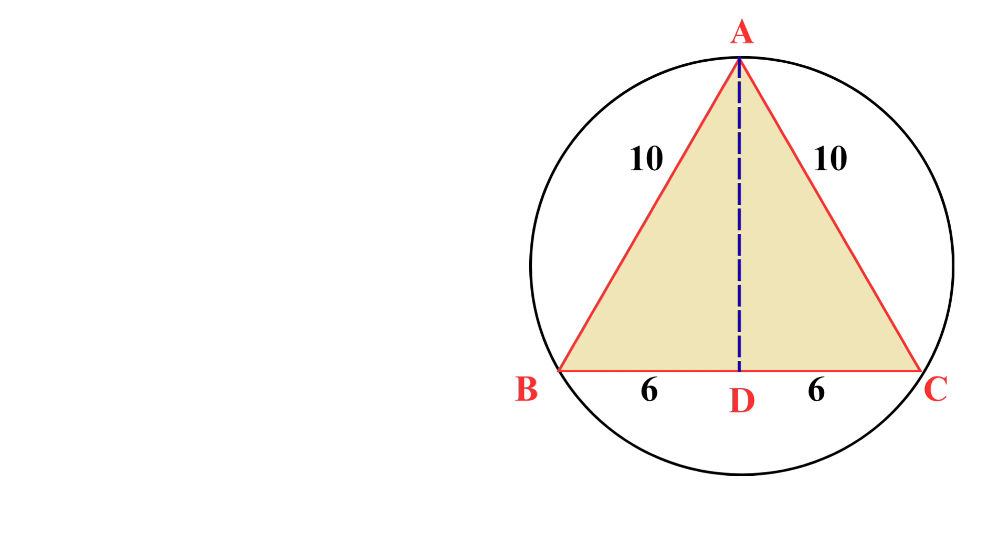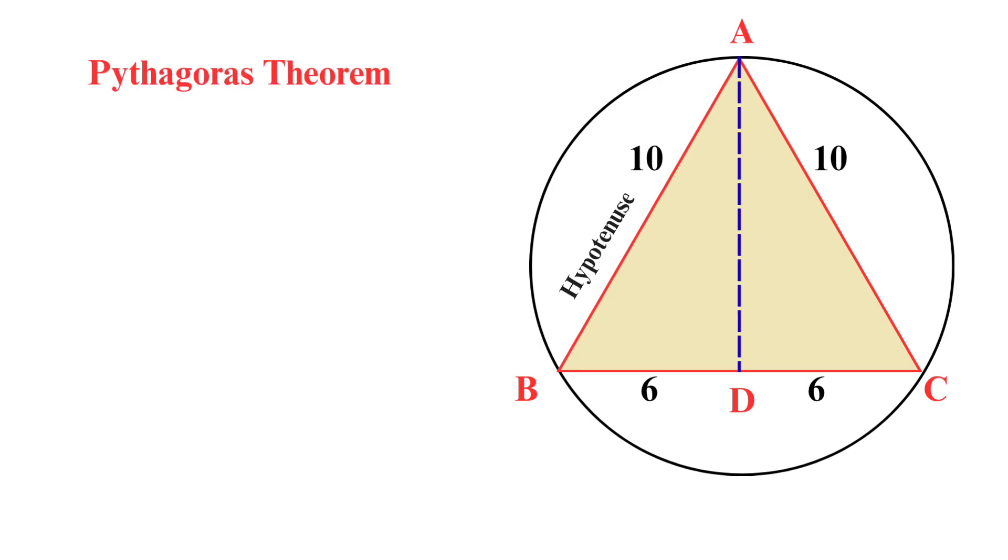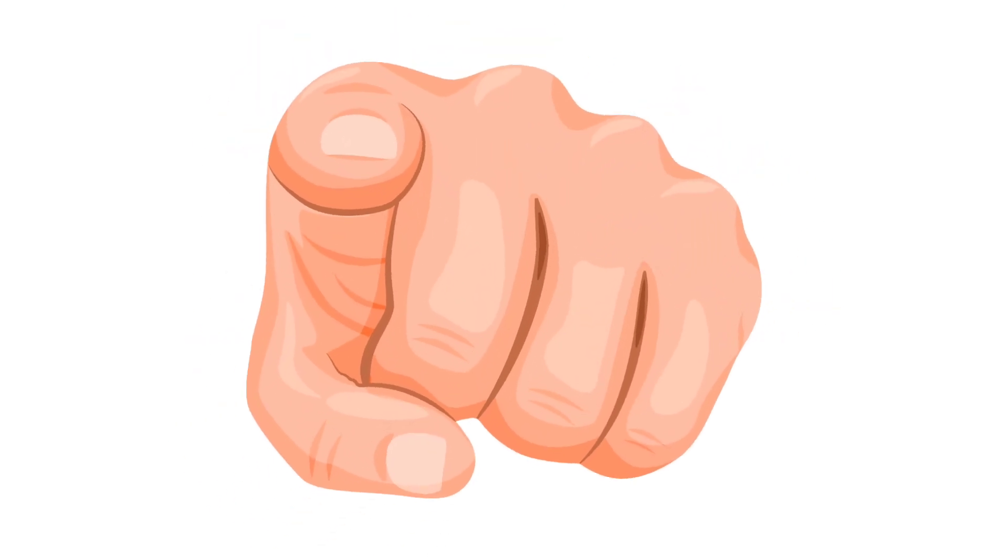Now, here we want to find the length of this perpendicular AD. For this, we use the Pythagoras theorem. By Pythagoras theorem, this hypotenuse square will be equal to base square plus perpendicular square. So, this will become our hypotenuse AB. Now, can you solve this?